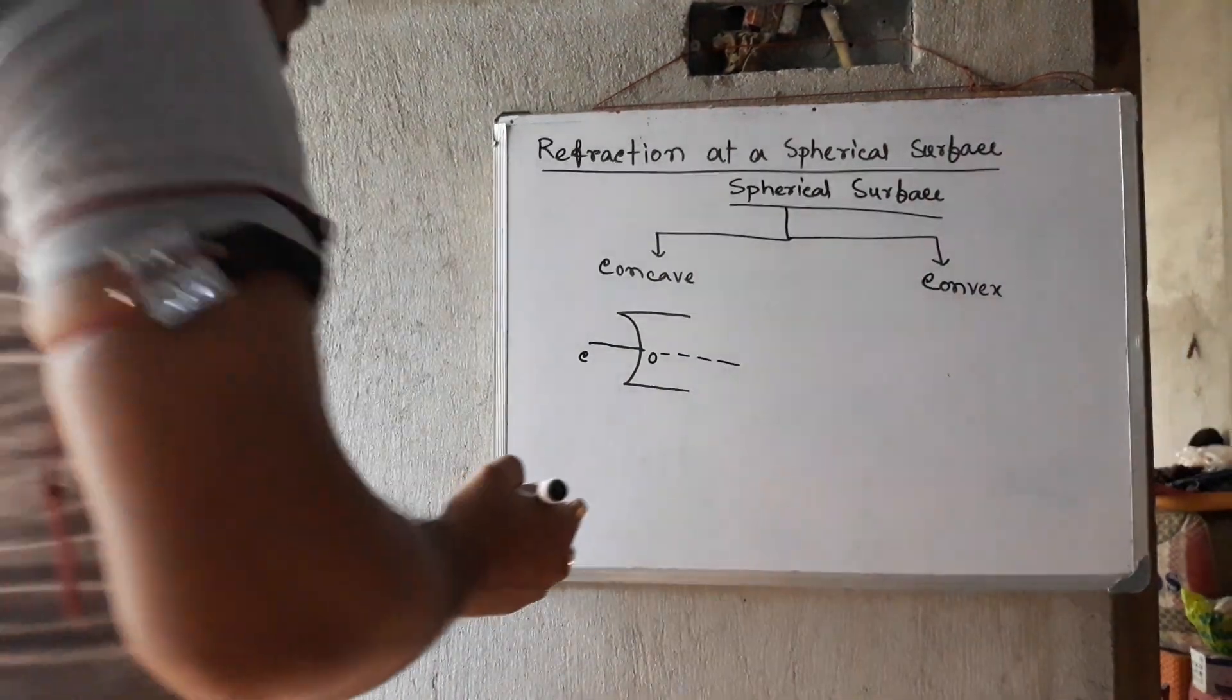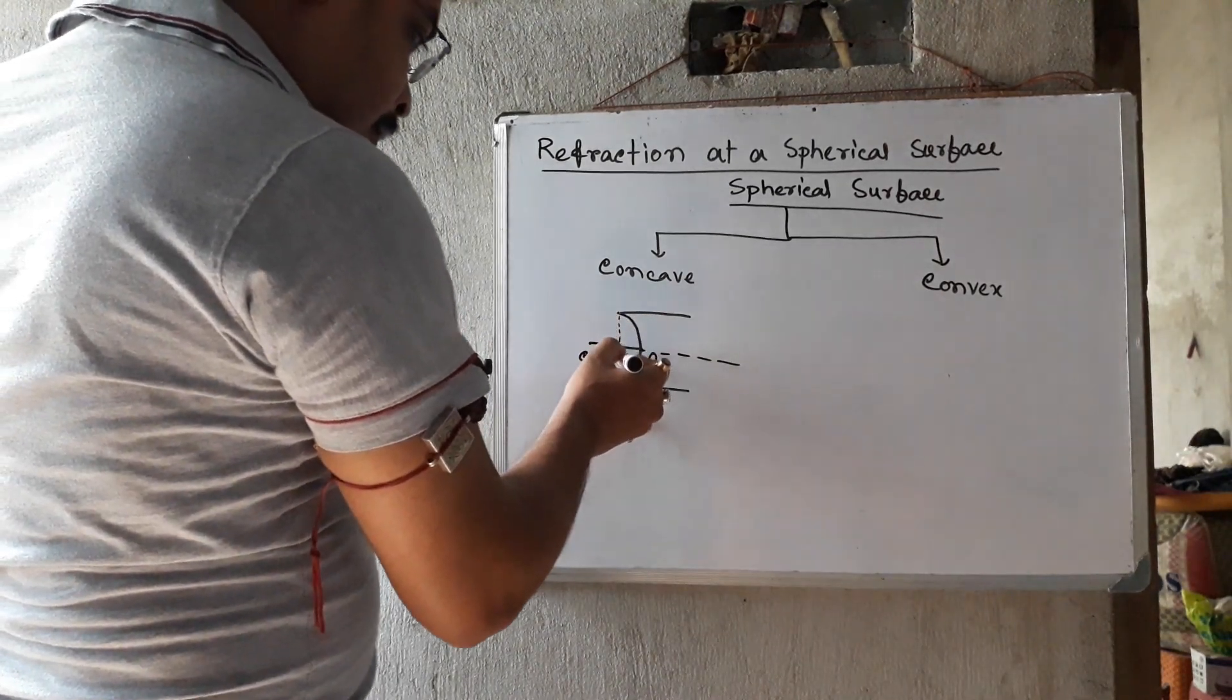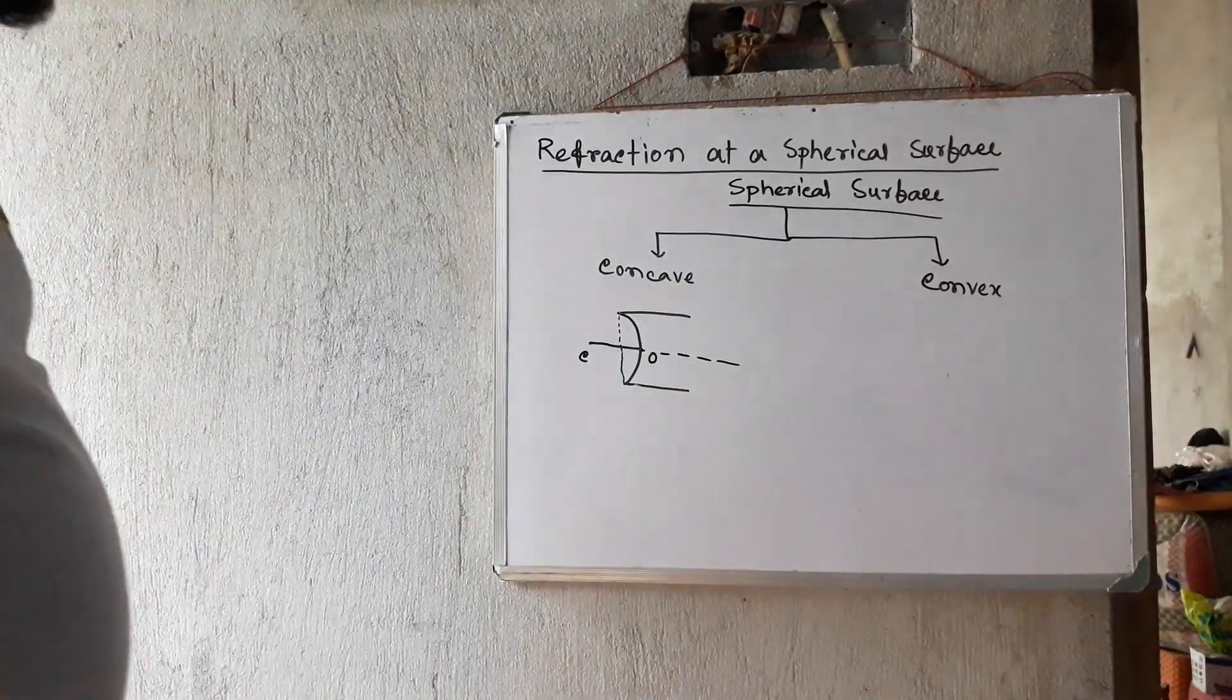We have aperture now. Hiding pointer. Radius is on the right side.